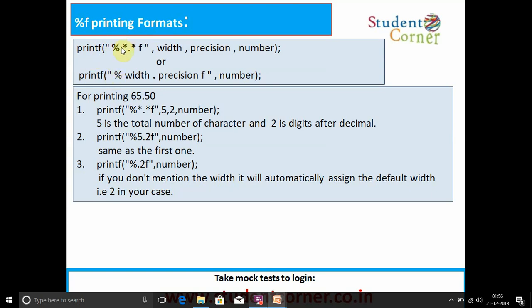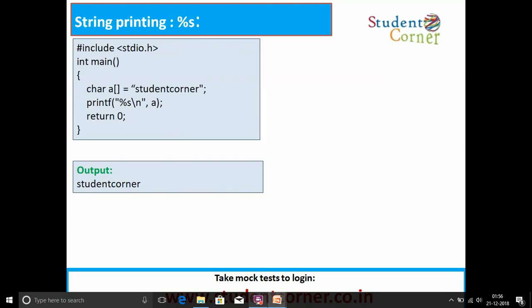Percentage f printing formats: printf %*.*f with precision number, or %width.precision f comma number. For printing 65.50, printf %*.*f comma 5 comma 2 comma number, or 5.2f, or .2f. We can represent any one of the three ways.